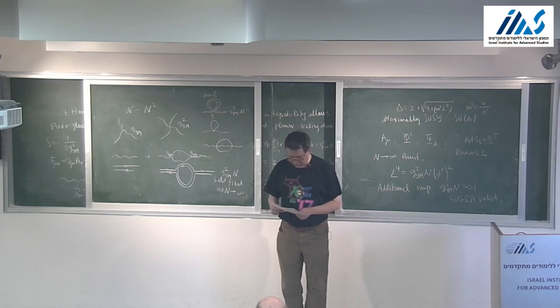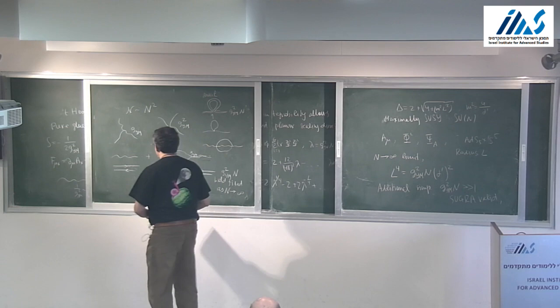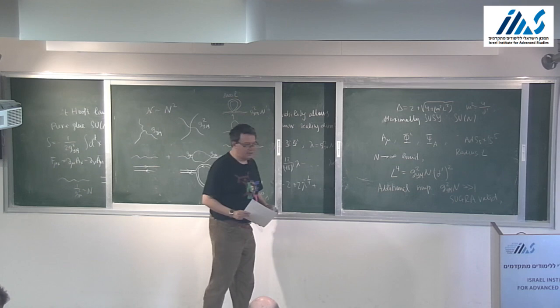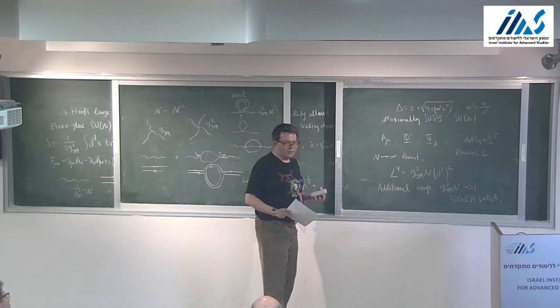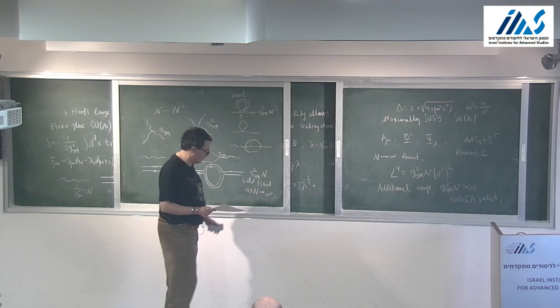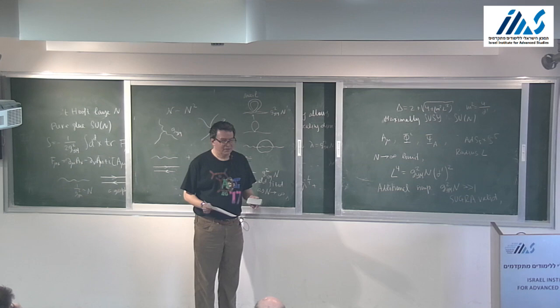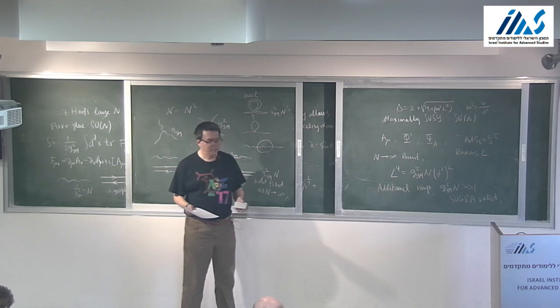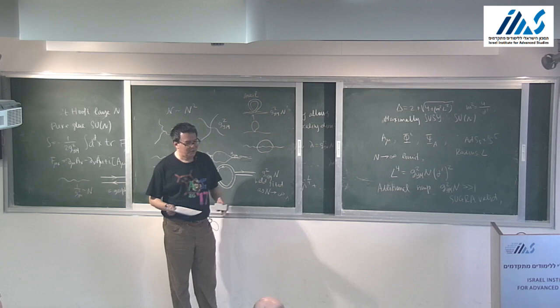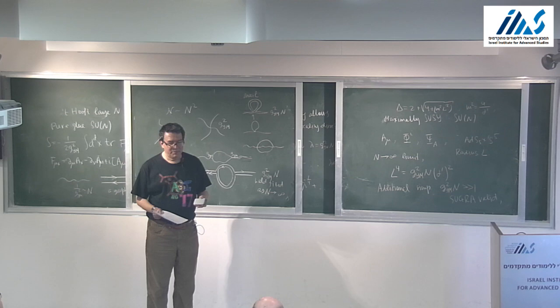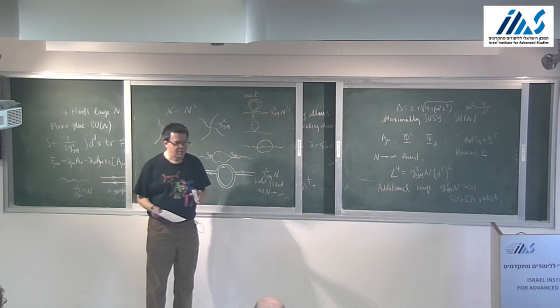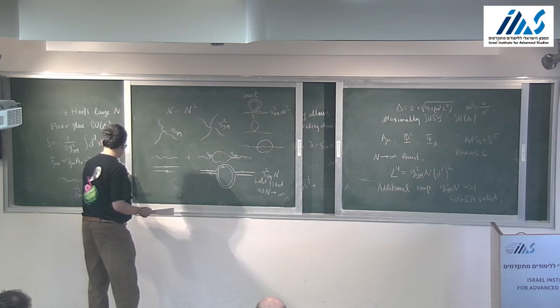There is a dramatic jump in complexity going from vectors to matrices. The number of diagrams contributing in the vector case was relatively small — only bubble diagrams. Many people thought that going to tensors would be totally intractable. People started playing with tensors already in the early 1990s and no one knew exactly what to do with them.